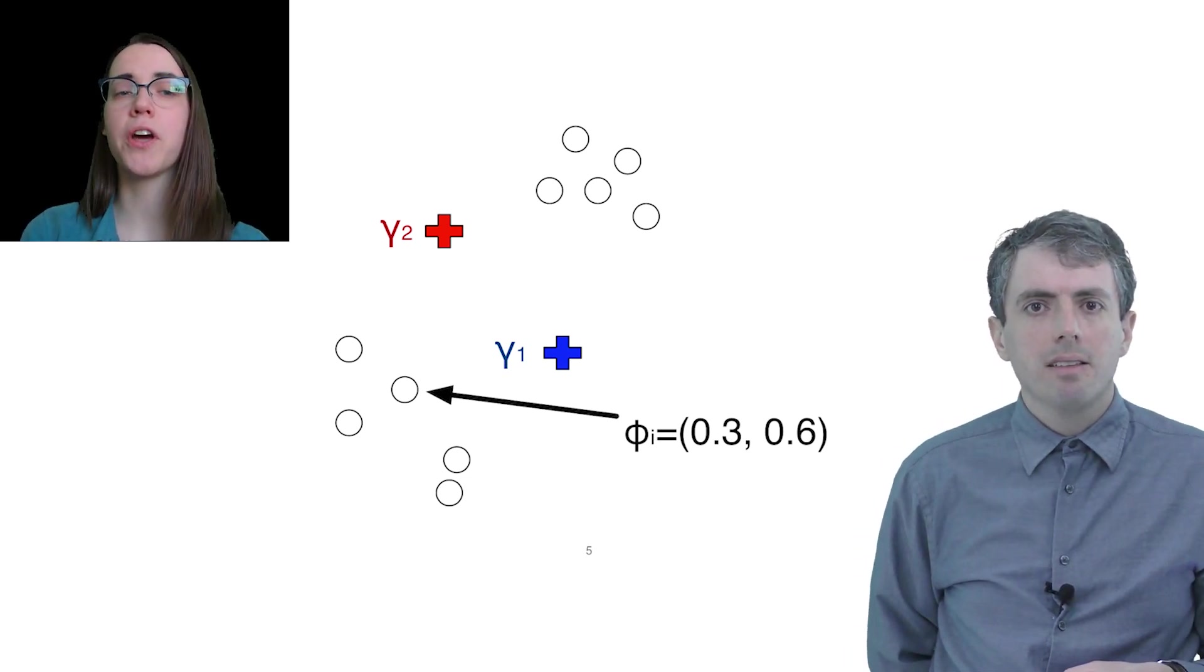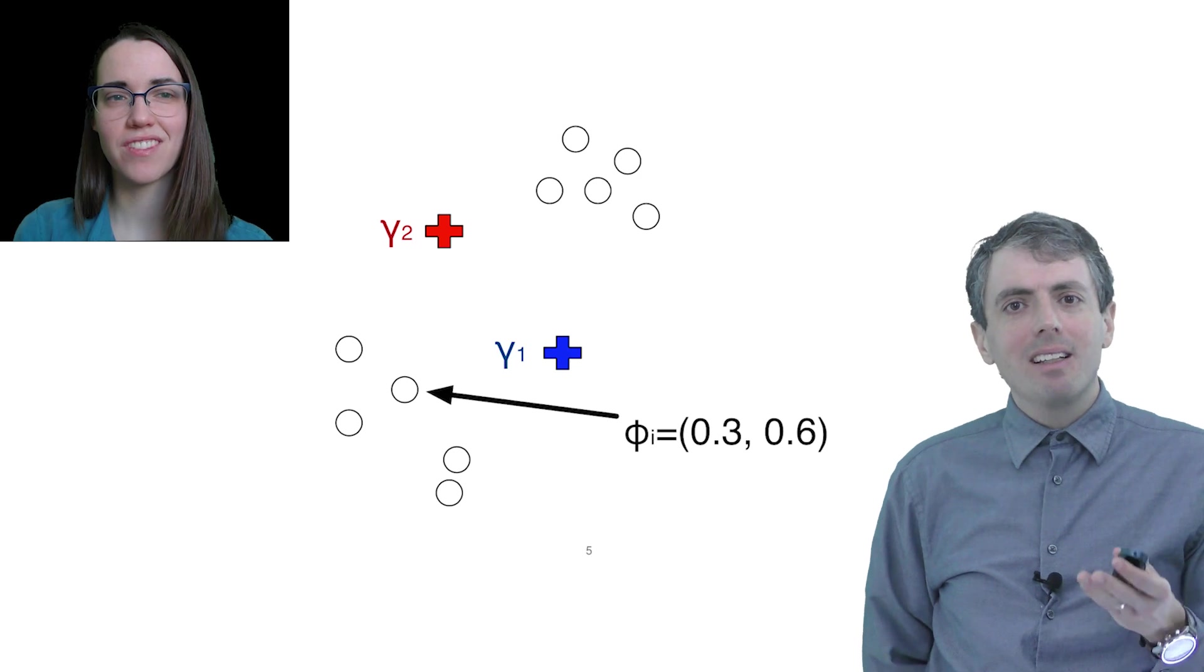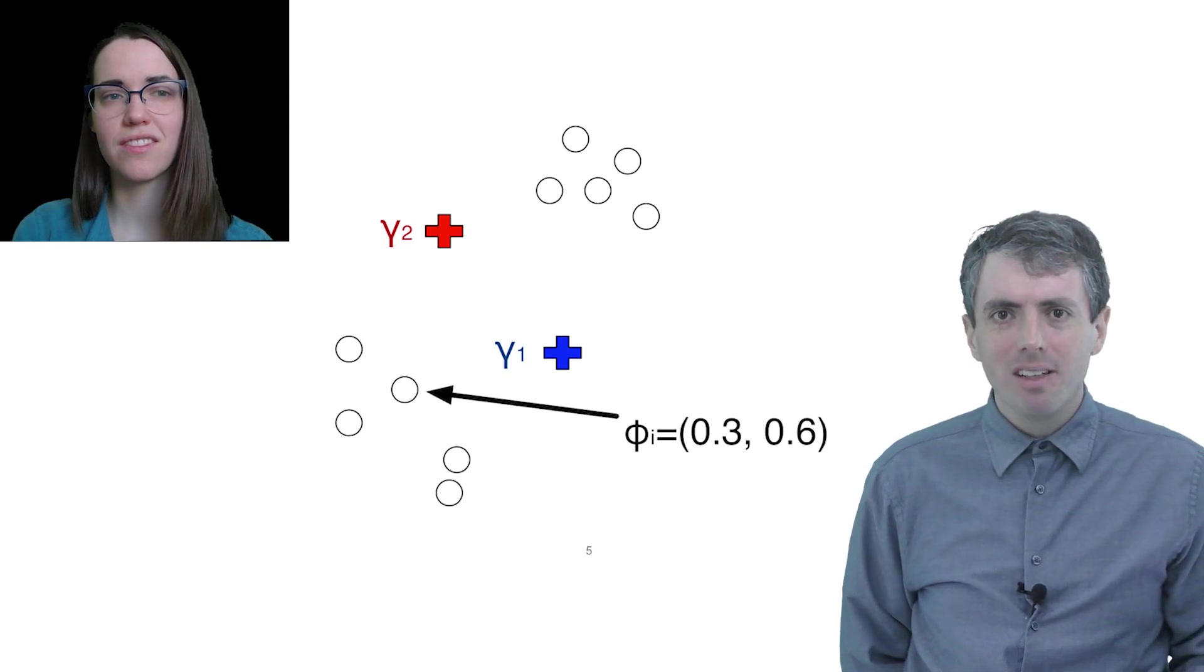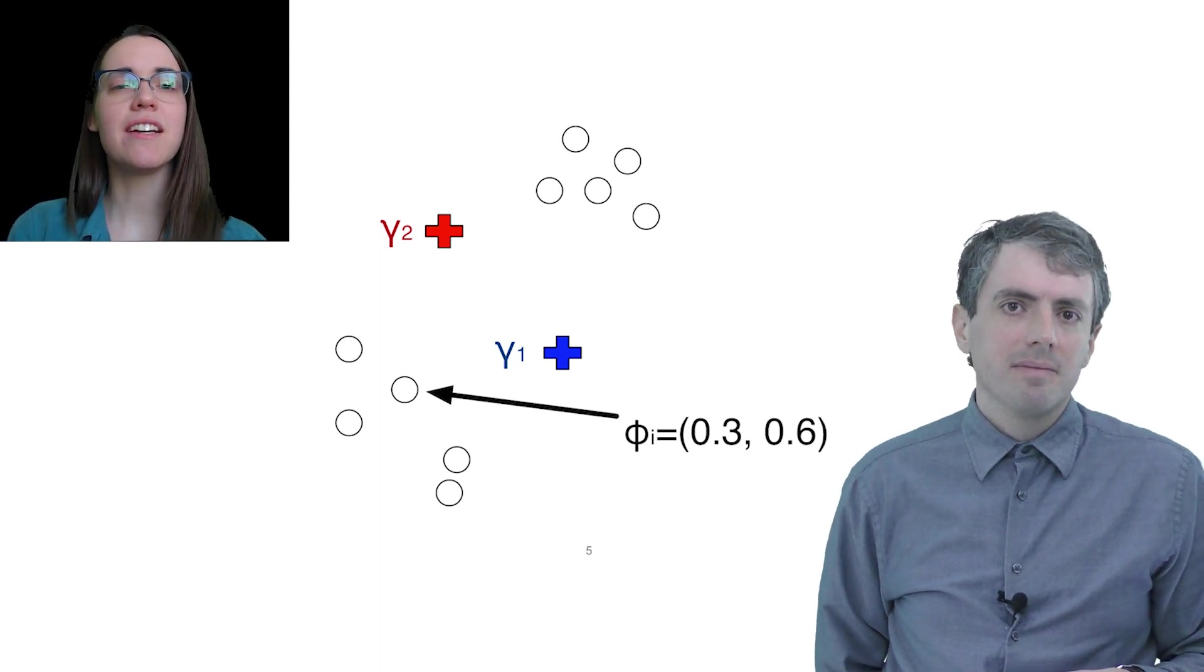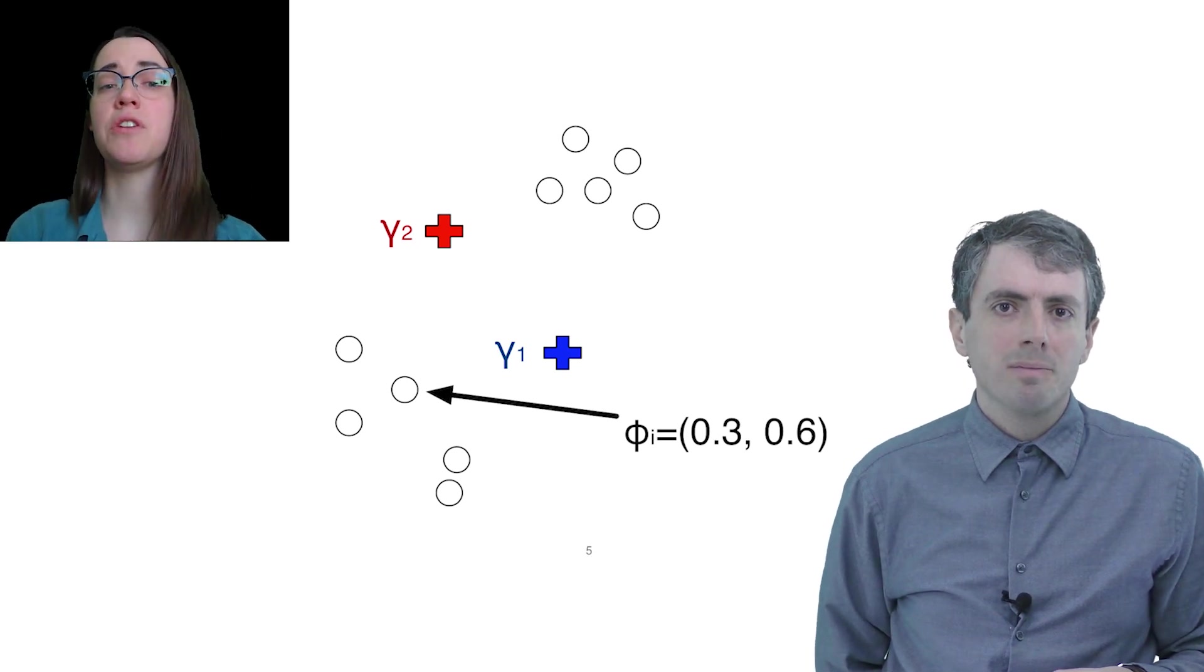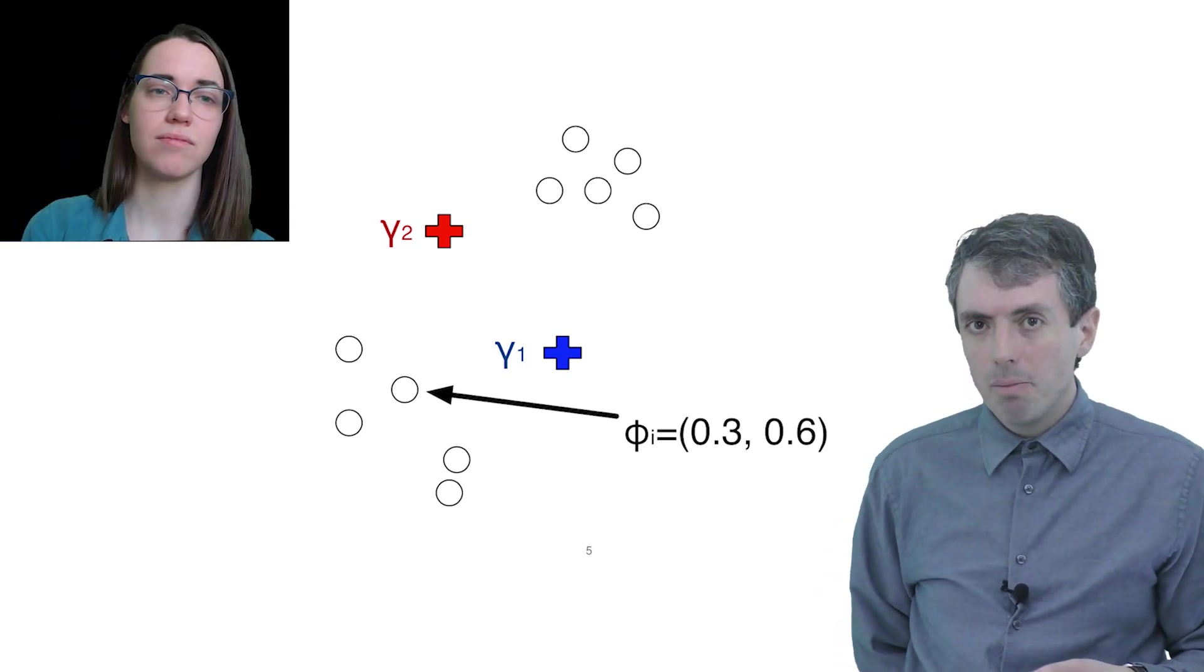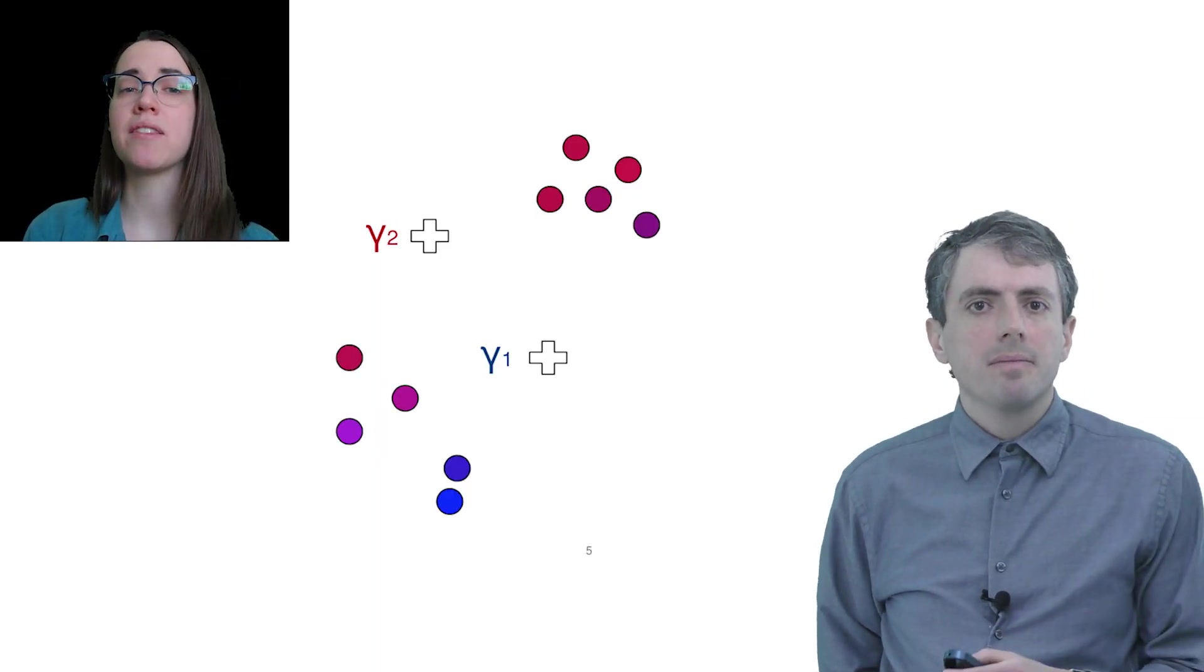Phi for each point will encode a vector for that point over each of the possible clusters it could be assigned to. But in the generative story, the cluster assignment z is matching every point to a single cluster. Why is it now a vector? So it's a variational distribution over your latent variables. Since the cluster assignment is a categorical variable, the variational distribution is a multinomial distribution over the different values it could take on. Okay, then we have to do the same thing for all of the points. Yep.